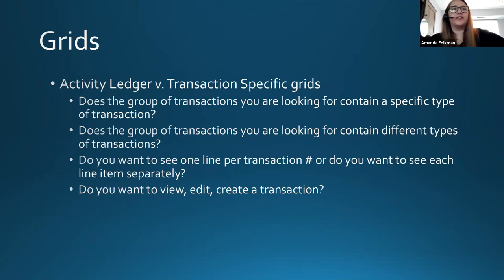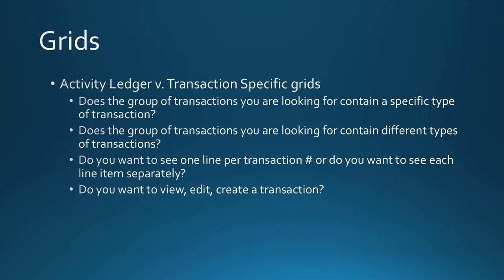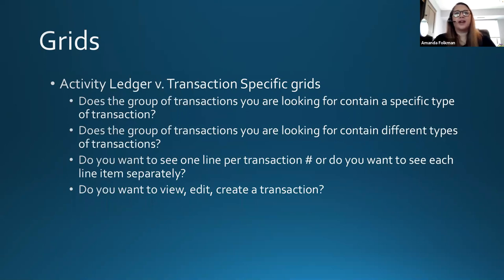Narrowing this down a bit more specifically, I want to talk about using the activity ledger versus using transaction-specific grids — your purchase order grid — and when to use one versus the other. The questions I think over when deciding are: Does the group of transactions I'm looking for contain a specific type of transaction, or does it contain different types? Am I only looking for purchase orders, or do I want to see a purchase order, then the invoice and the disbursement — anything related? Or am I trying to find a group that contributes to a monetary total that may contain different transaction types?